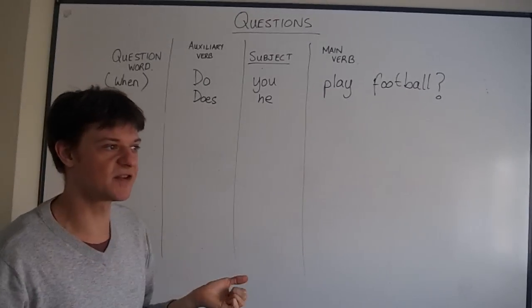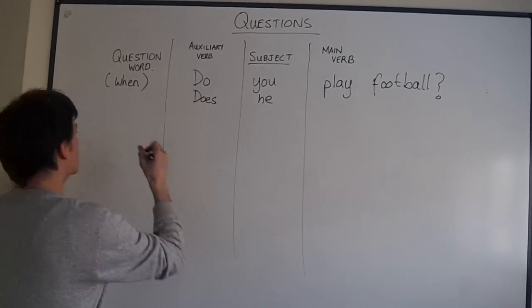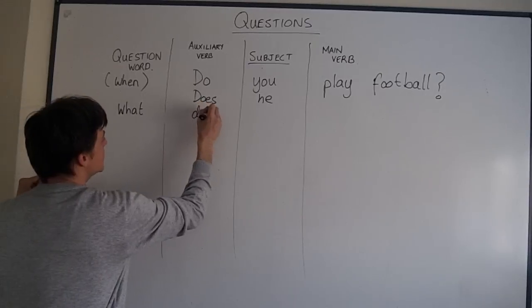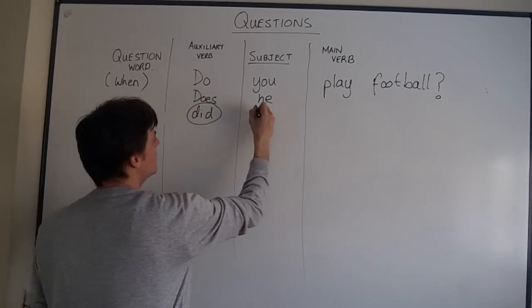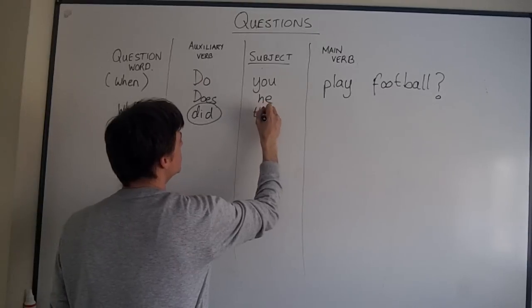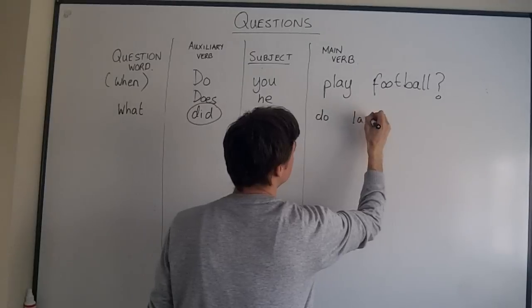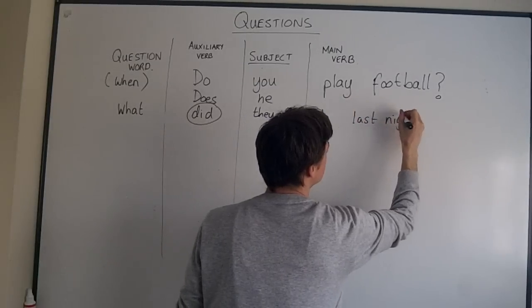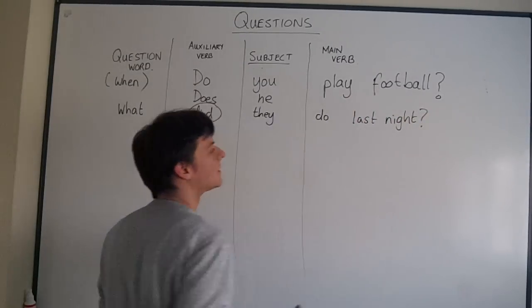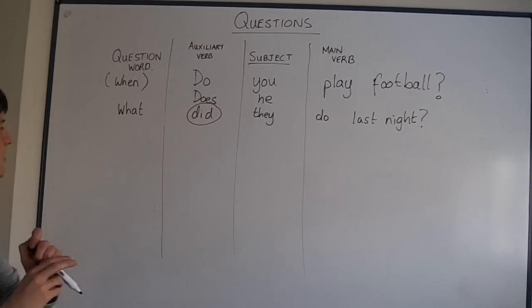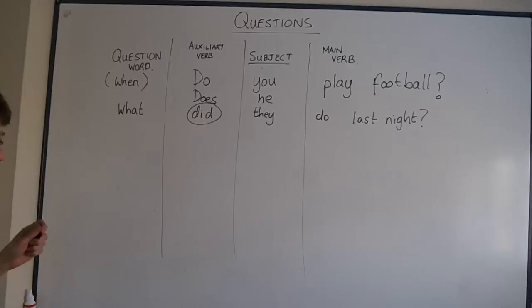So, if we ask a question in past simple. What? Did? Did is the auxiliary in past simple. What did they do last night? What did they do last night? OK? I don't know. What did you do last night? Think and answer in past simple. OK.